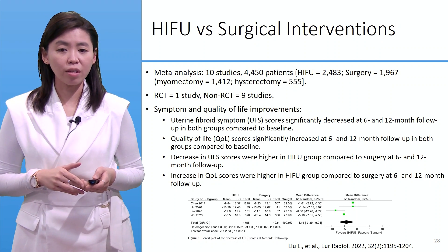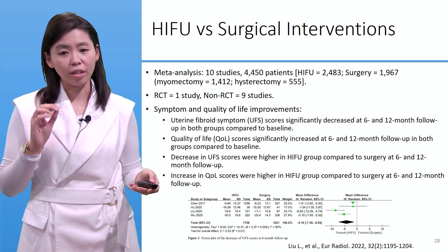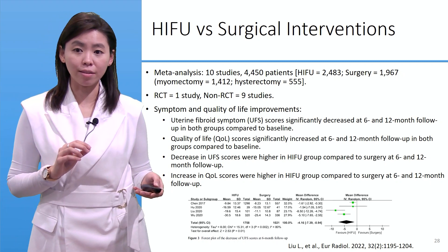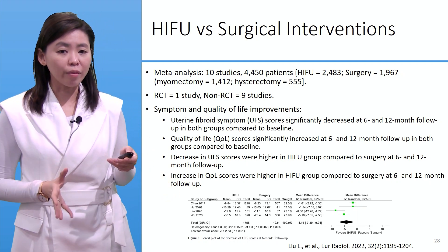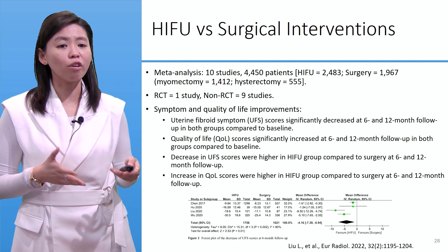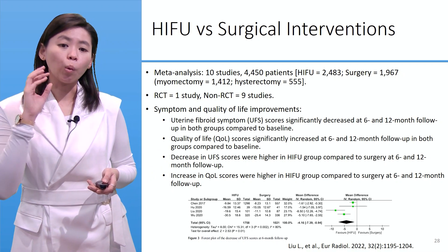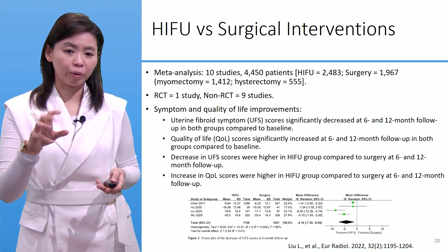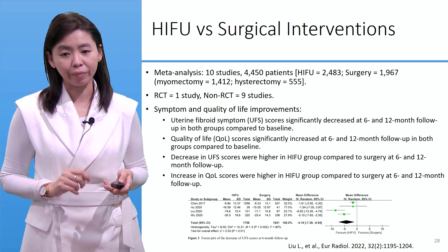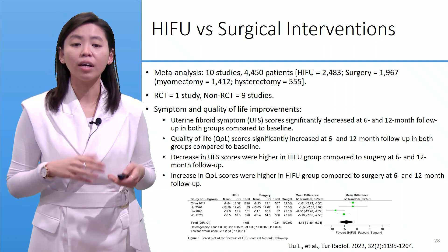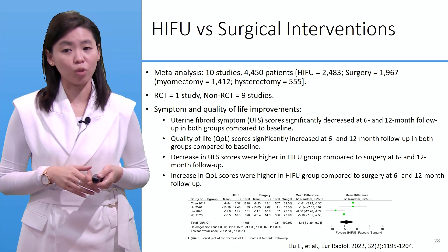Symptom and quality of life improvement results show that the uterine fibroid symptom (UFS) score significantly decreased at six and twelve month follow-up for both groups compared to baseline. Quality of life scores significantly increased at six and twelve months in both groups. The decrease in UFS score was significantly higher in the HIFU group compared to surgery at six and twelve months, and the increase in quality of life scores was also higher in the HIFU group.